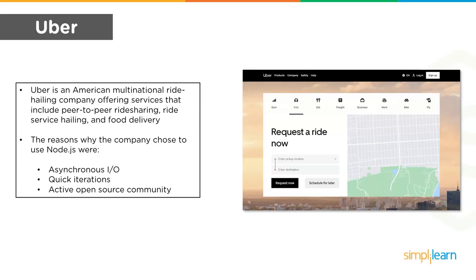Uber is an American multinational ride-hailing company offering peer-to-peer ride sharing, ride service handling, and food delivery. The reasons Uber chose Node.js were asynchronous I/O, quick iterations, and an active open source community. Asynchronous I/O permits other processing to continue before transmission has finished. Node.js is continually updated with new features that help improve web server performance, and the active open source community resolves many problems that an organization may face.